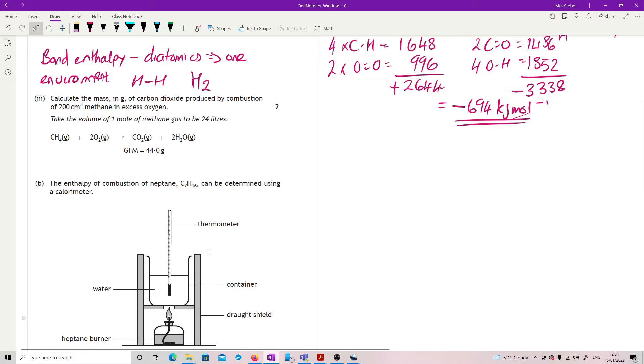Part three. Calculate the mass in grams of carbon dioxide produced by combustion of 200 centimetres cubed of methane and excess oxygen. Take the volume of one mole of methane gas to be 24 litres. You could do this several ways. I realised after I'd worked it, actually, I could have done this by proportion, but the way I did it was moles is volume divided by molar volume.